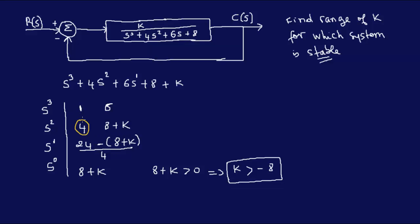And this one also got to be positive. Well, we already know that 1 is positive, 4 is positive. Here, because we don't know the value of k which we're trying to find, we have to equate this. We have to make this positive. And in order for that to happen, the numerator has to be positive. So we have 24 minus 8 minus k has to be positive in order for the system to be stable.